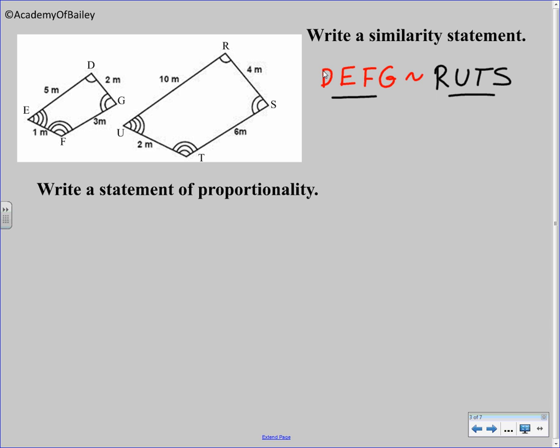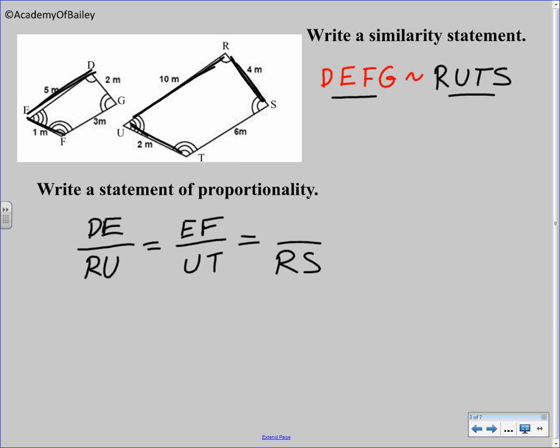The next example here asks for a statement of proportionality. Statement of proportionality just says D, E over top of R, U is equal to E, F over U, T. Statement of proportionality. That's also equal to, I don't want to say R, S on top because R, S has always been on bottom. The right figure has always been on bottom. The left figure has always been on top in this statement of proportionality. And G, F, S, T. I'm going to put those backwards from what I said. But that would be your statement of proportionality.